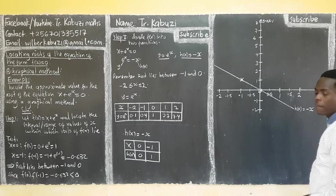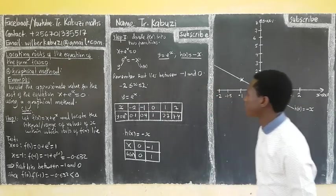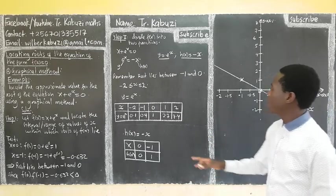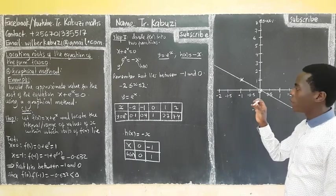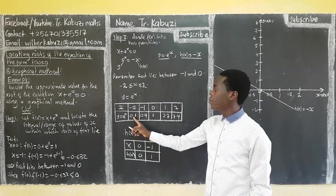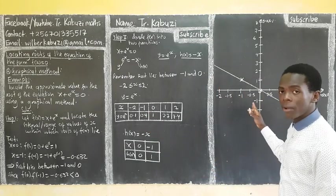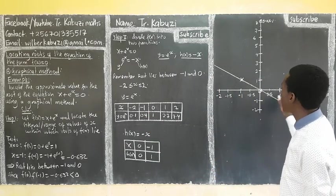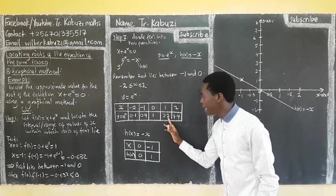Then now, we come and we put this exponential function. When x is negative two, we have zero point one. Now here, the points I was putting, I was putting to one decimal place. Why? Because I can easily locate them on this graph I drew.